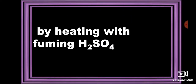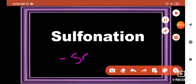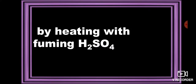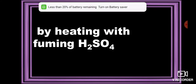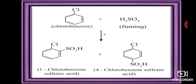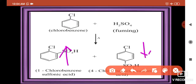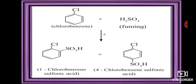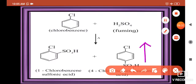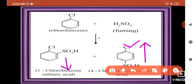The next reaction is sulfonation. In sulfonation, there is addition of an SO3H group. When aryl halides are heated with fuming H2SO4, this reaction is called a sulfonation reaction. For example, chlorobenzene reacted with fuming H2SO4 gives 1-chlorobenzenesulfonic acid and 4-chlorobenzenesulfonic acid. The ortho product is the minor product and the para product — that is, 4-chlorobenzenesulfonic acid — is the major product, as the SO3H group attaches at the ortho and para positions.